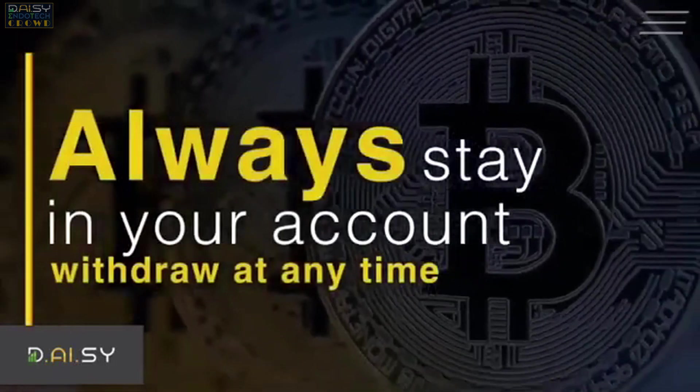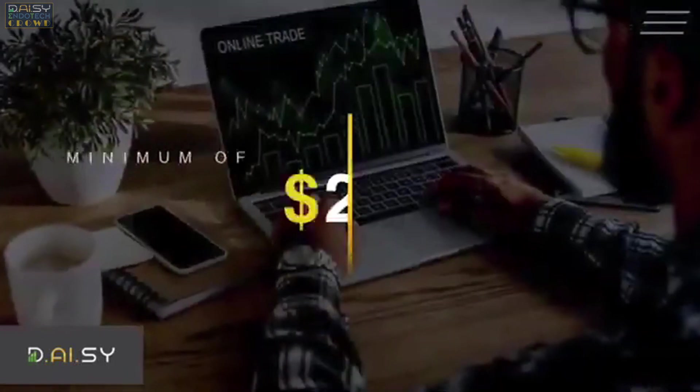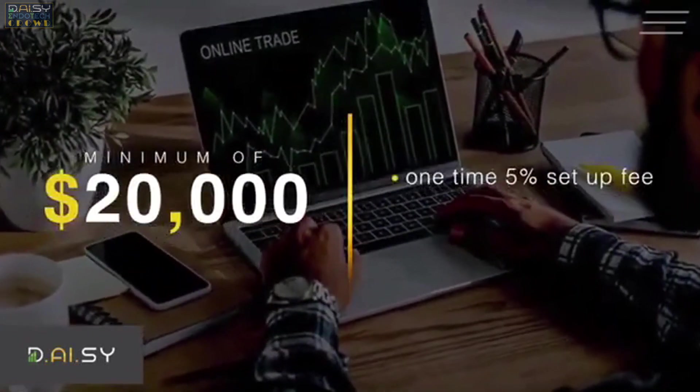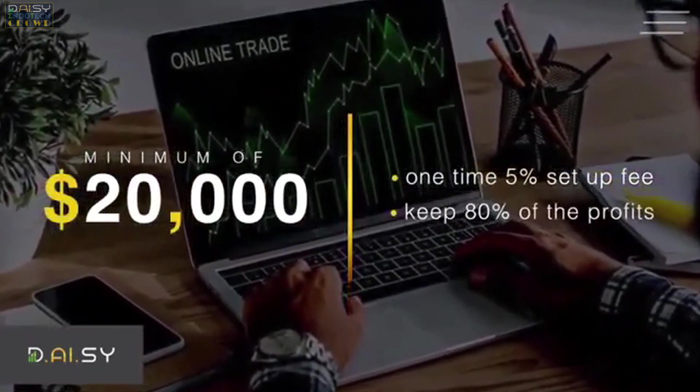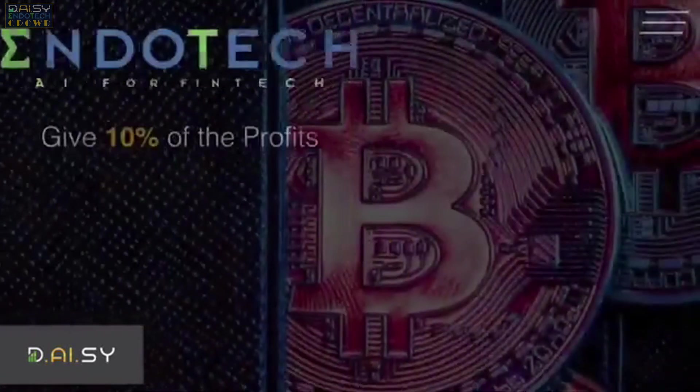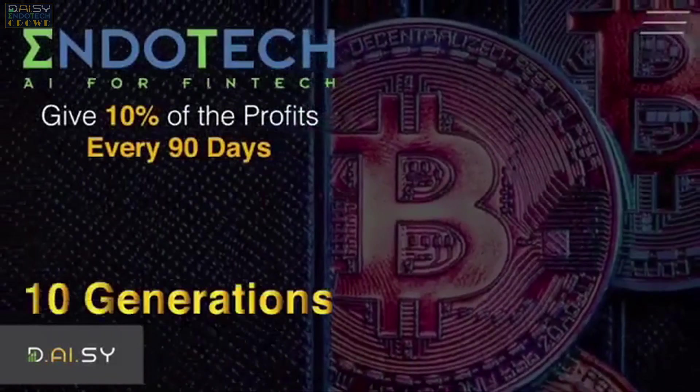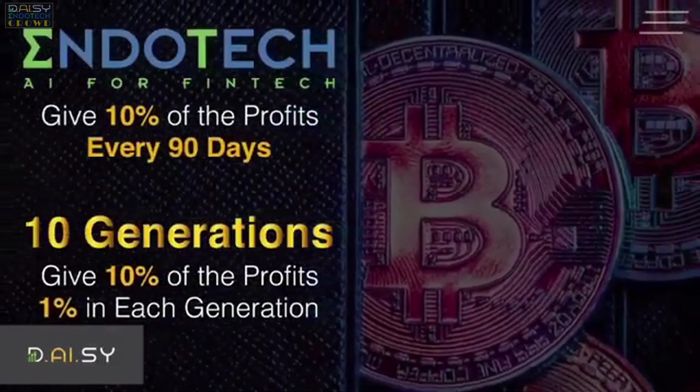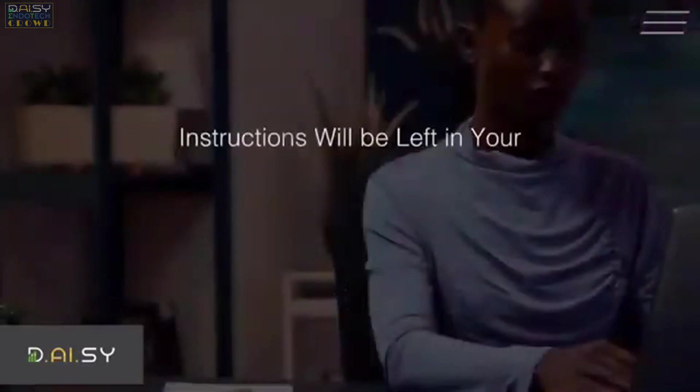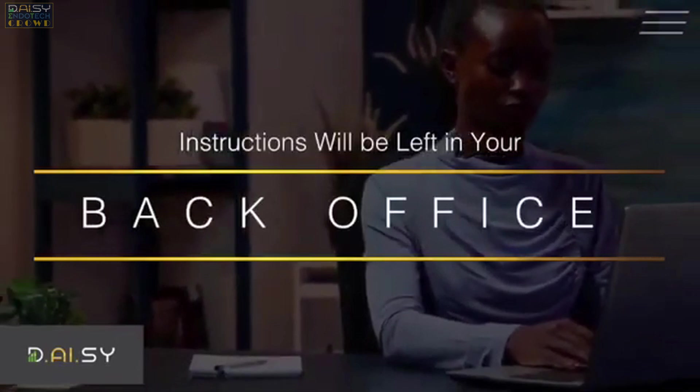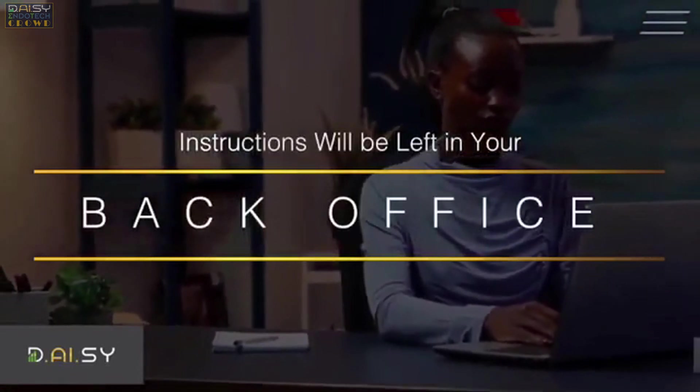Funds always stay in your personal account and you can withdraw at any time. You need a minimum of $20,000 to trade with. Pay a one-time 5% setup fee to Endotech and keep 80% of the profits. You then give 10% of the profits to Endotech every 90 days and another 10% go to the 10 generations in the unilevel with 1% in each generation.